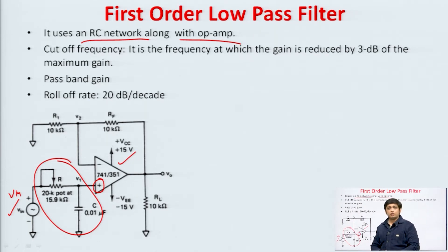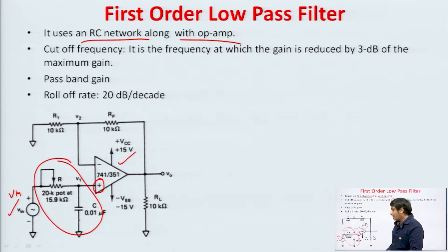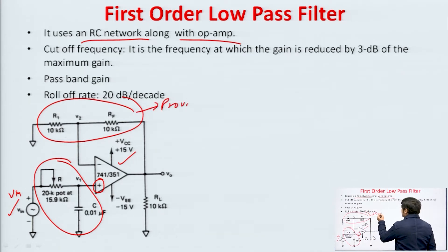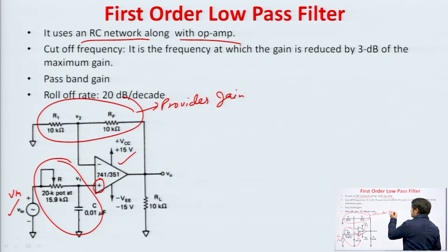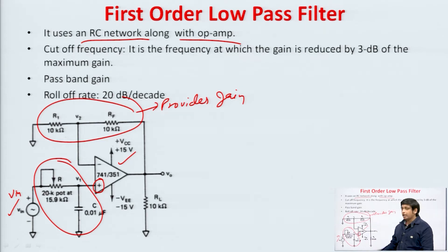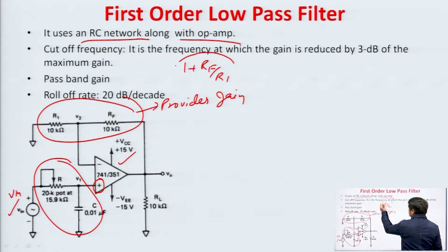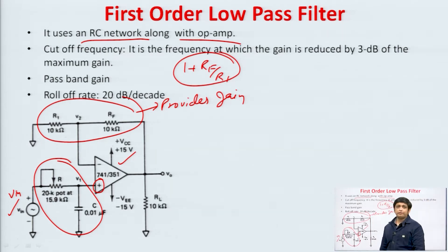So there will be no loading effect in this circuit. That is why we are using non-inverting configuration. Another section of this circuit is R1 and Rf. This R1 and Rf provides gain. As we had seen in the last class, this is one of the advantages of the active filter over passive filter — that active filter provides gain. If we calculate the pass band gain of this circuit, since it is a non-inverting configuration, the pass band gain will be 1 plus Rf upon R1. This equation we had derived in the non-inverting configuration of op amp.